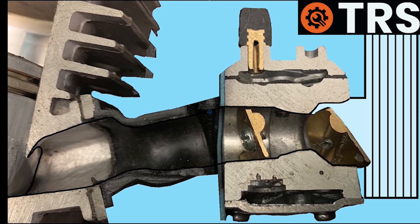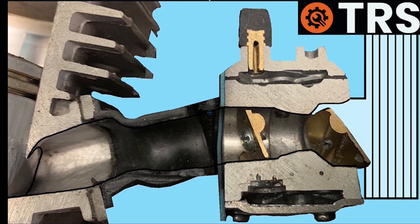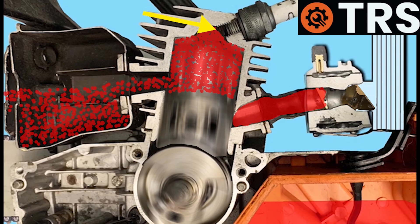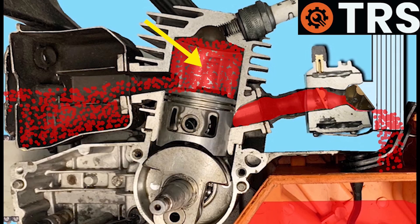Therefore all that will continue to happen if we keep pulling the cord is we're going to keep filling the cylinder with fuel and the spark plug will get wet because the spark cannot ignite liquid fuel and it will continue to flood the engine the more we pull the starter pull cord and eventually we will see fuel backed up to the air filter and it's at that stage we know it's definitely flooding.